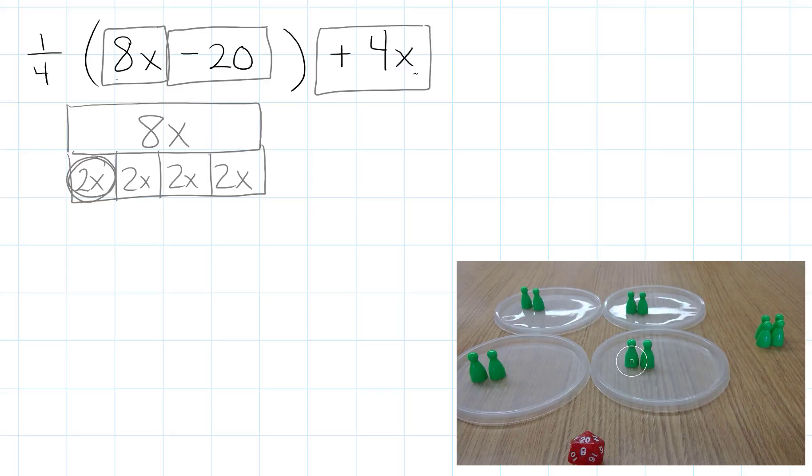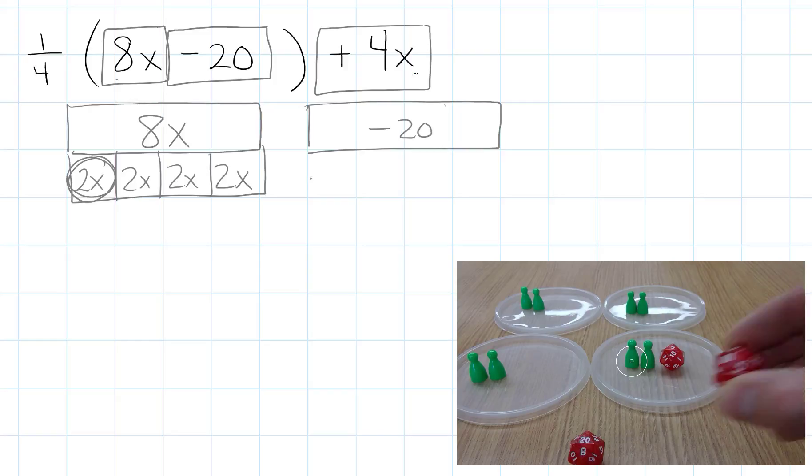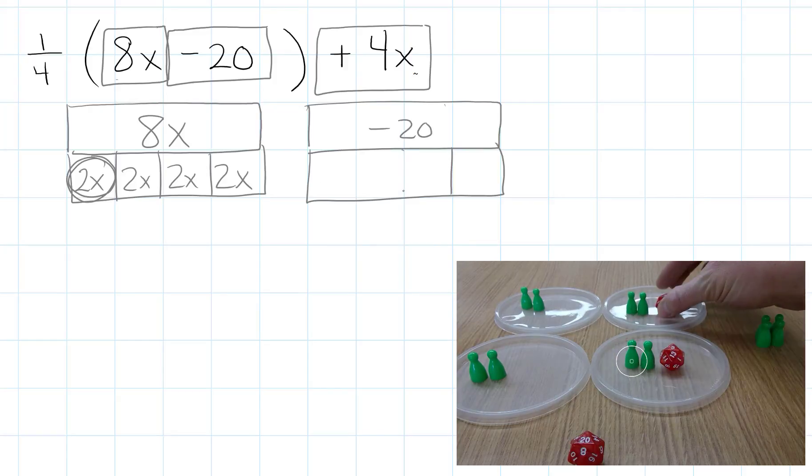And I'm going to do the same thing with negative 20. I'm going to take negative 20 and split that up into 4 equal sections. Let me put negative 20 in first. And when we do that, each section is going to get 5 negatives.